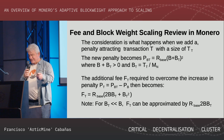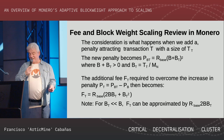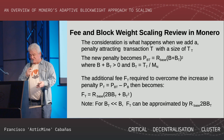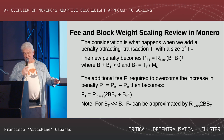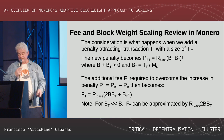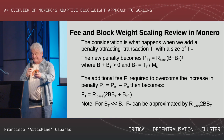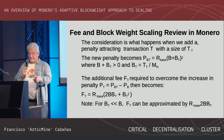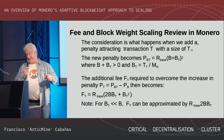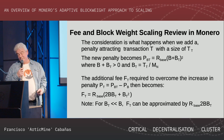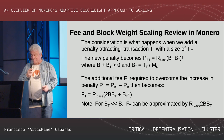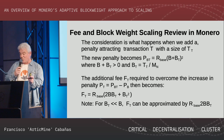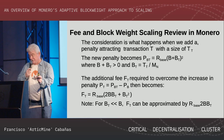When we add a penalty-attracting transaction, after working through the formulas, the additional cost to the miner is: r = base × (2b·bt + bt²), where bt is the transaction block weight and b is how far into the penalty you're already in. That formula determines the fee the miner will require to include that transaction.